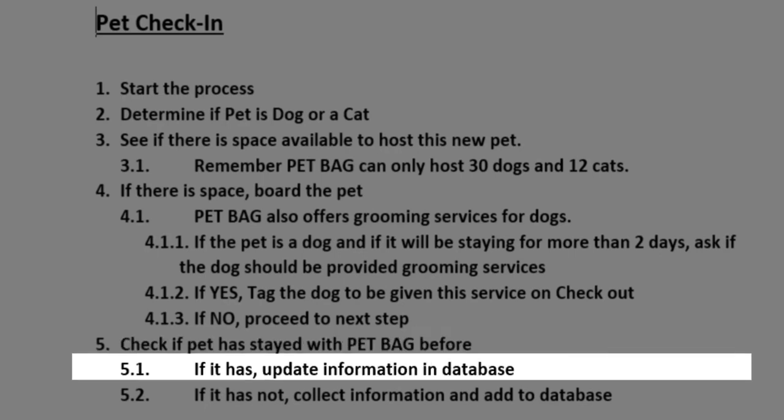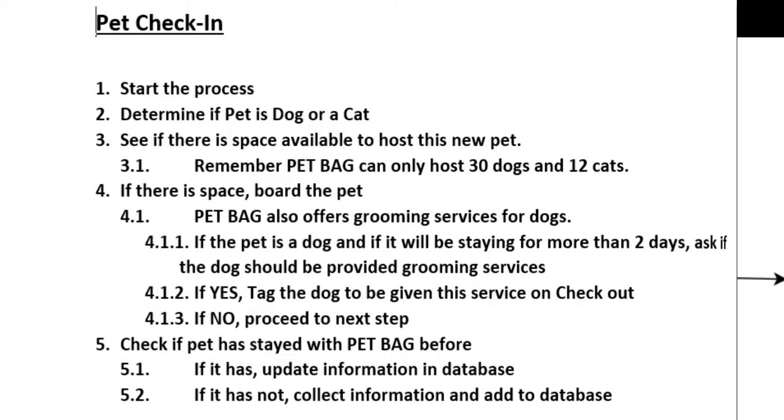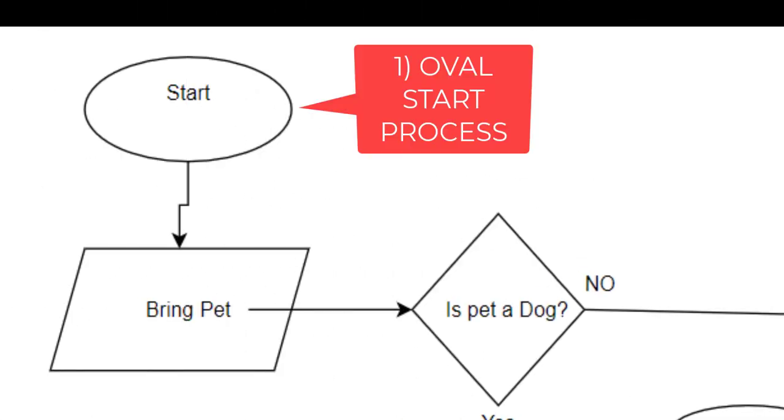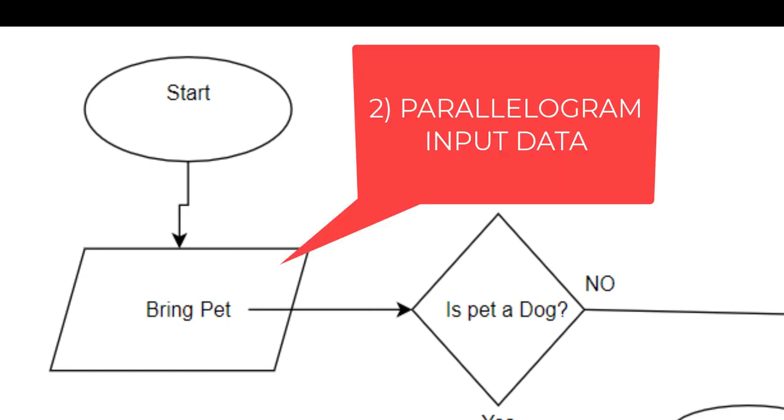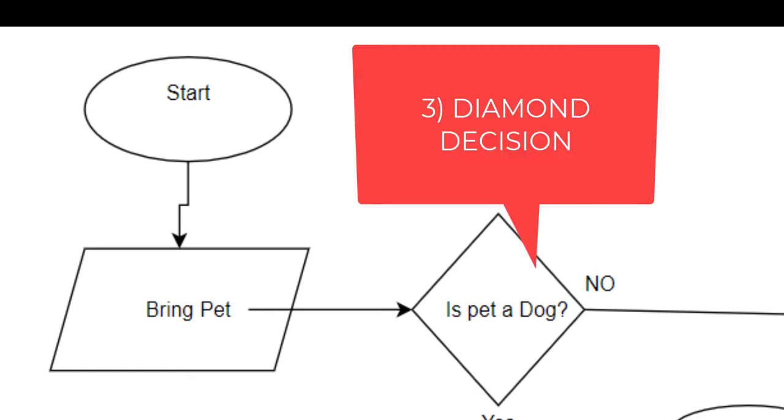So now we have created the flowchart after reviewing this Word doc. So we're going to start out with the oval, which is the start. Then we're going to the parallelogram, which represents data. And then we have our first decision.